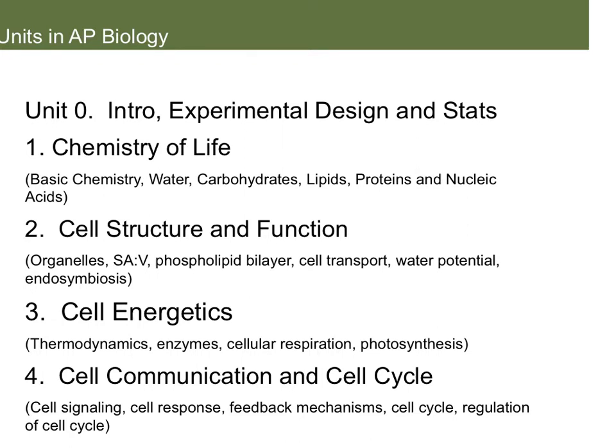Unit two is on cells. That unit is usually pretty easy compared to other units. We do get into the cell membrane, and there's some math calculating water potential. Unit three is probably one of the harder units. It is on cell energy, so we cover enzymes, cellular respiration, photosynthesis. It's very chemistry-oriented and a very difficult unit.